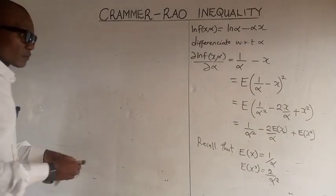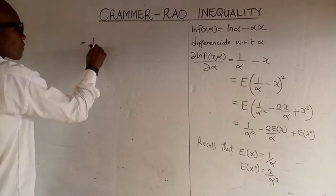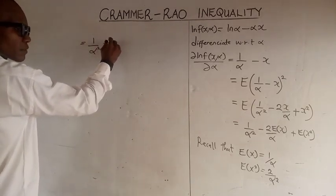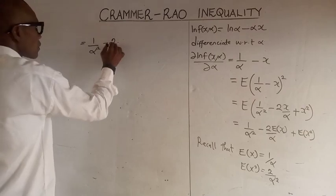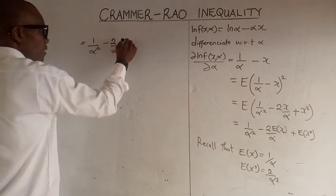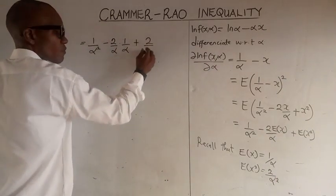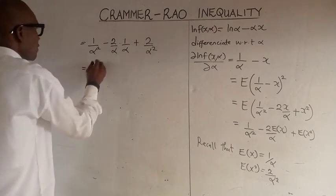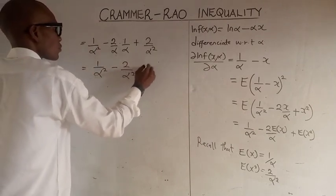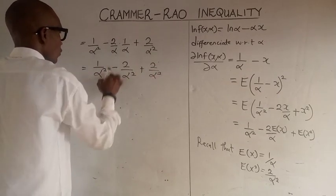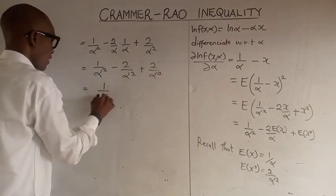So by substituting this, we have 1 over alpha squared minus 2 over alpha squared plus 2 over alpha squared. The whole thing will be zero. So our answer will be 1 over alpha squared.